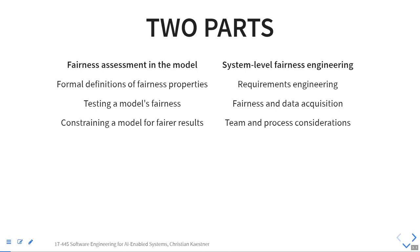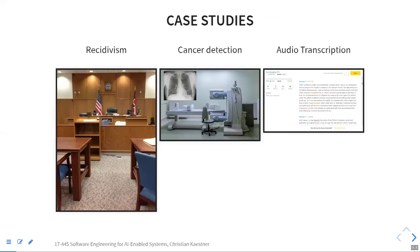There are two parts I want to cover today. One is fairness assessment of the model — this is where you see most of the machine learning research focusing. And then there's system-level fairness engineering, which focuses more on requirements engineering, thinking about teams and what kind of data you can collect. There's slowly more attention on this. The paper you read is a very good example of people actually caring about this in production and not just caring about the properties of the model.